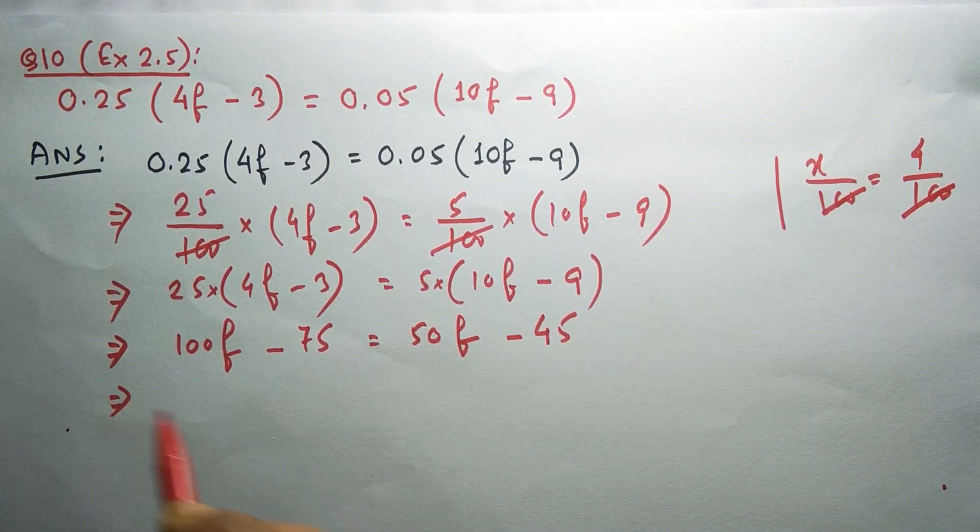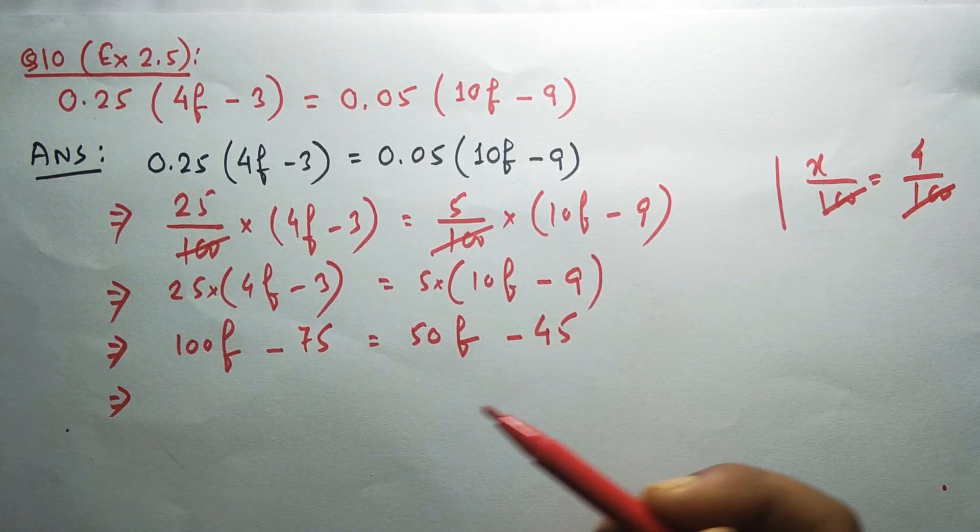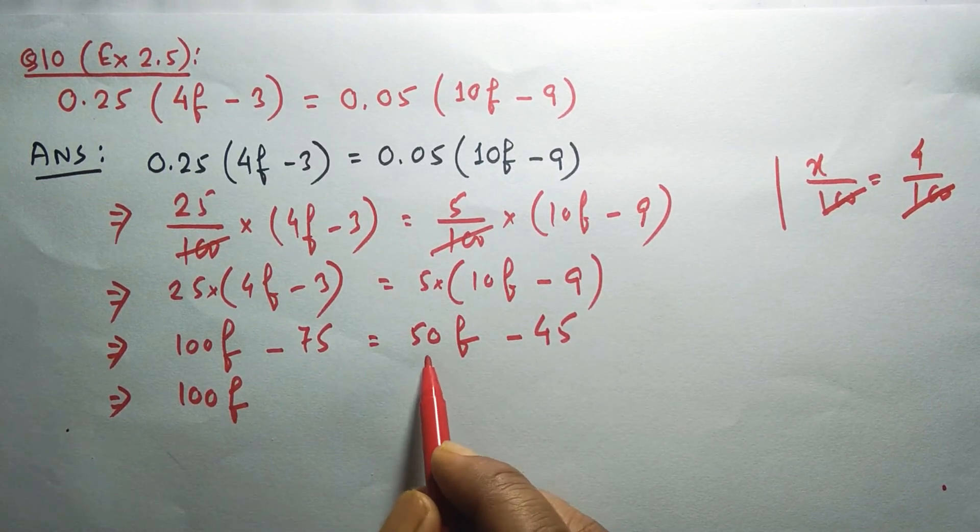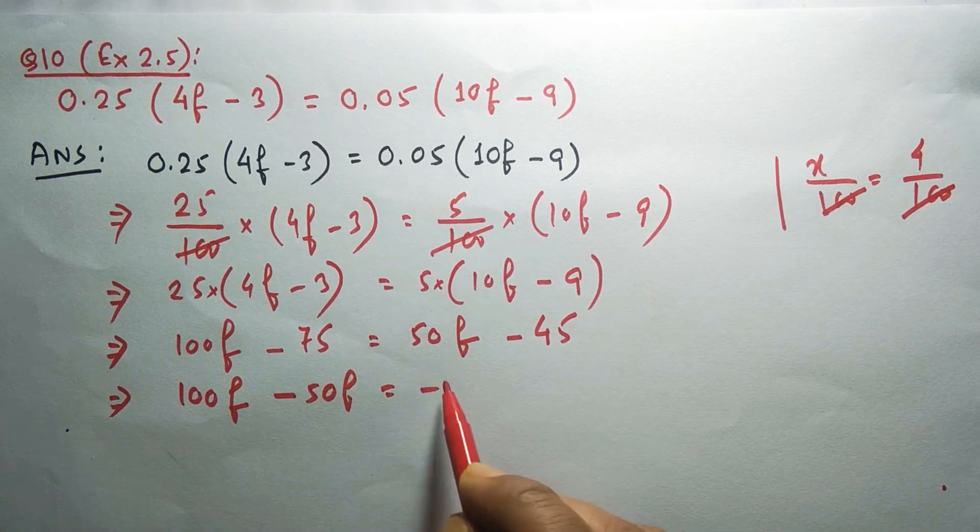We'll take the variable on the same side, numbers on the other side. This 100f, take 50f to the left hand side, minus 50f equals minus 45, take 75 to the other side, plus 75.